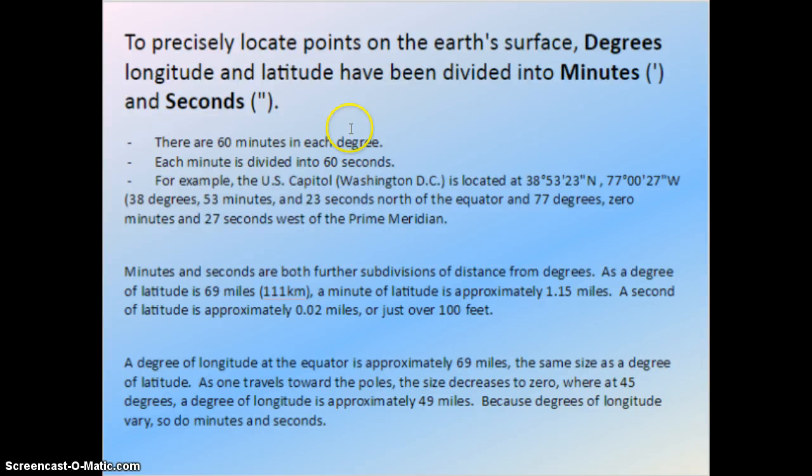Here's a way that we're going to further subdivide degrees into minutes and seconds. These are really just giving you more precise values. There are 60 minutes in each degree, and each minute is divided into 60 seconds. So the example of Washington, D.C., a precise measurement would be 38 degrees, 53 minutes, and 23 seconds north of the equator, and 77 degrees, 0 minutes, and 27 seconds west of the prime meridian.